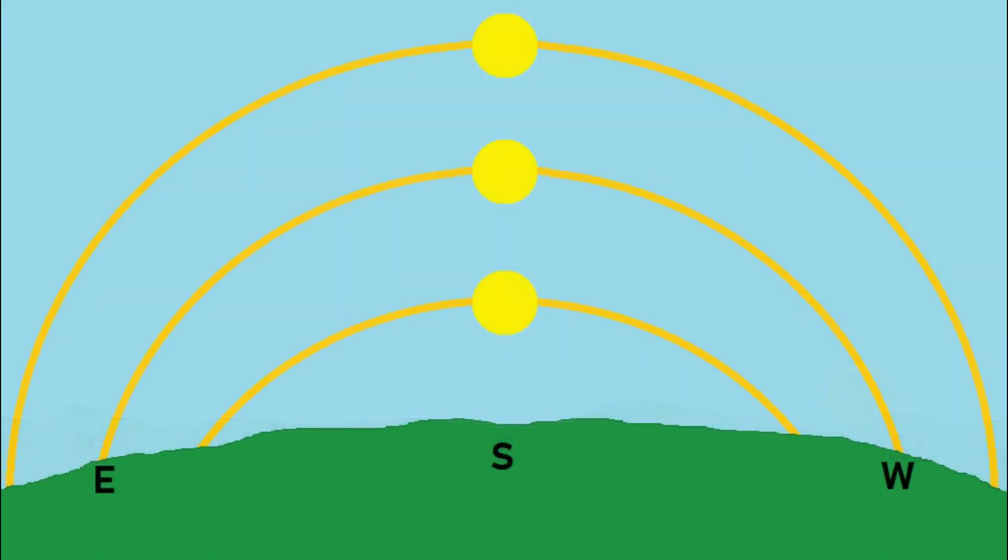The Sun would also follow a corresponding path in the sky further to the north or south, and setting further to the north or south of west. The daily change in position seems to happen faster towards the midpoint and appears to slow down at either end of the cycle.